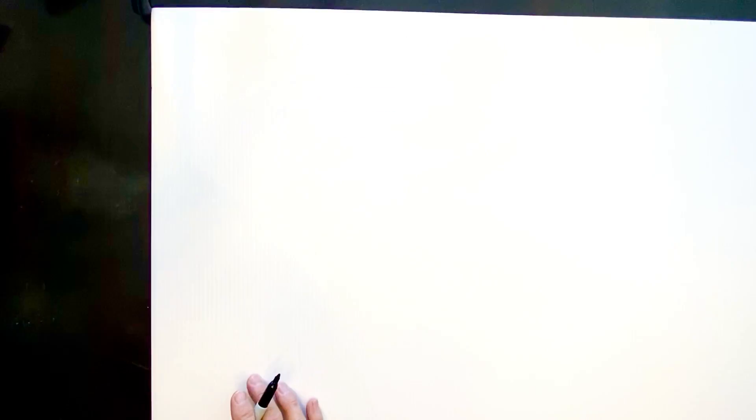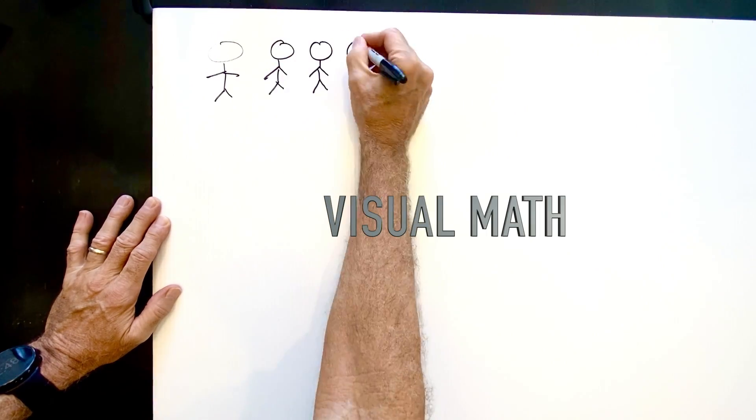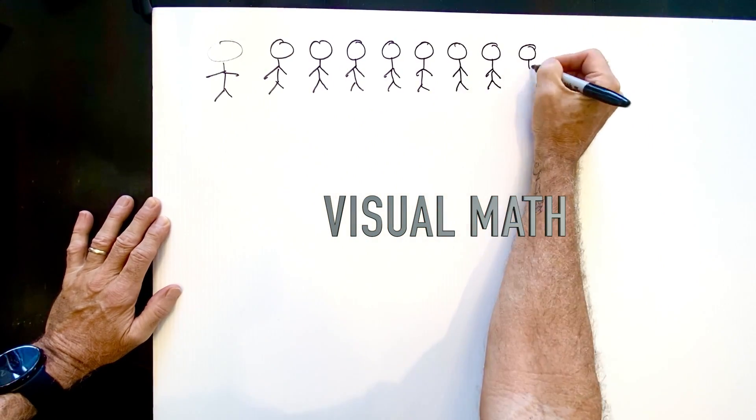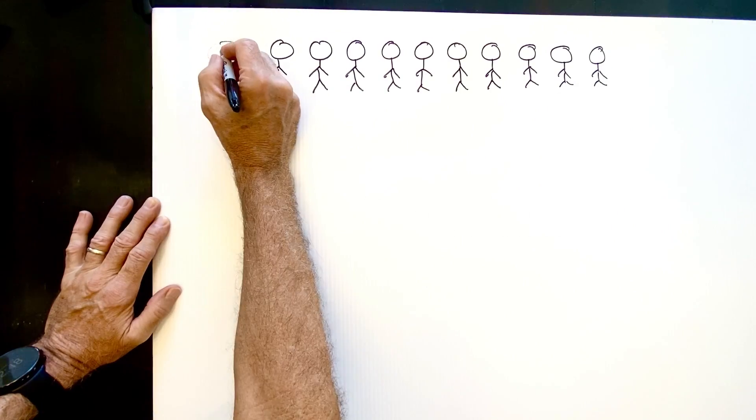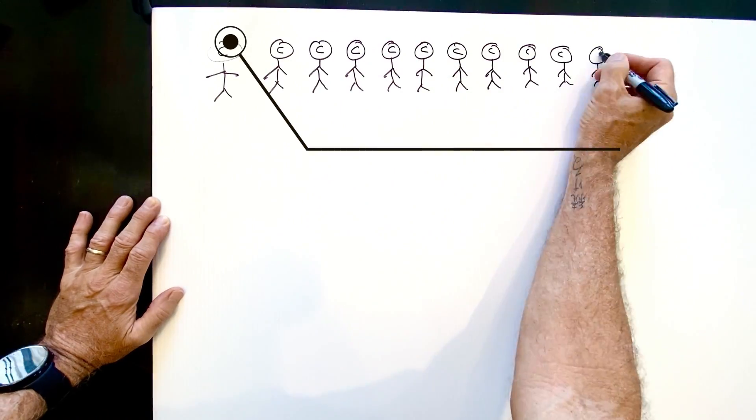I'm going to use the Casey Neistat stick figure method. Now let's call this a sample population. And in that sample population, someone gets infected with the coronavirus and affects others.